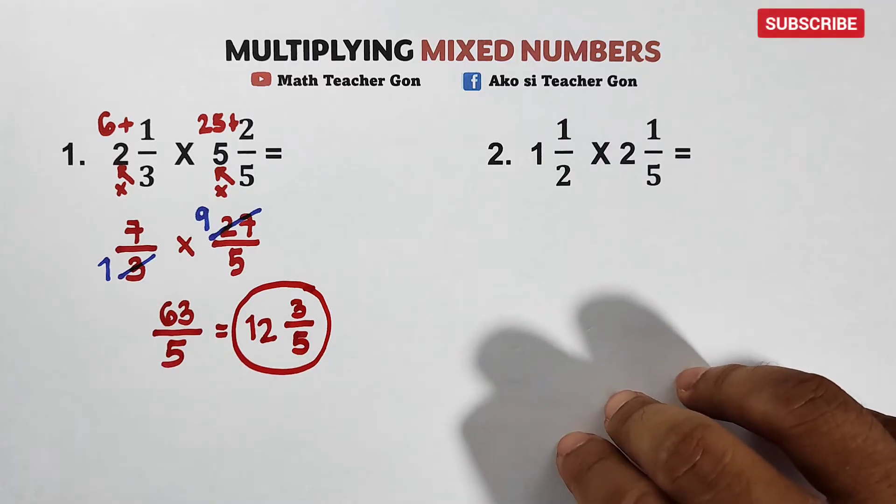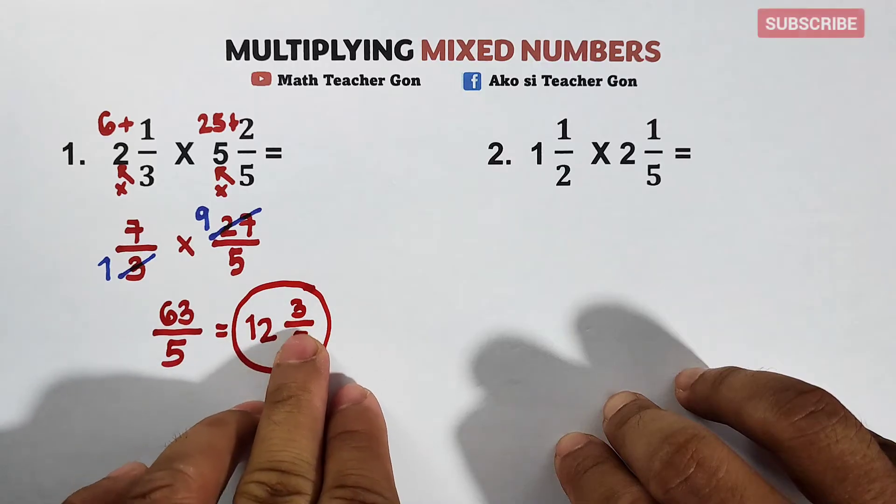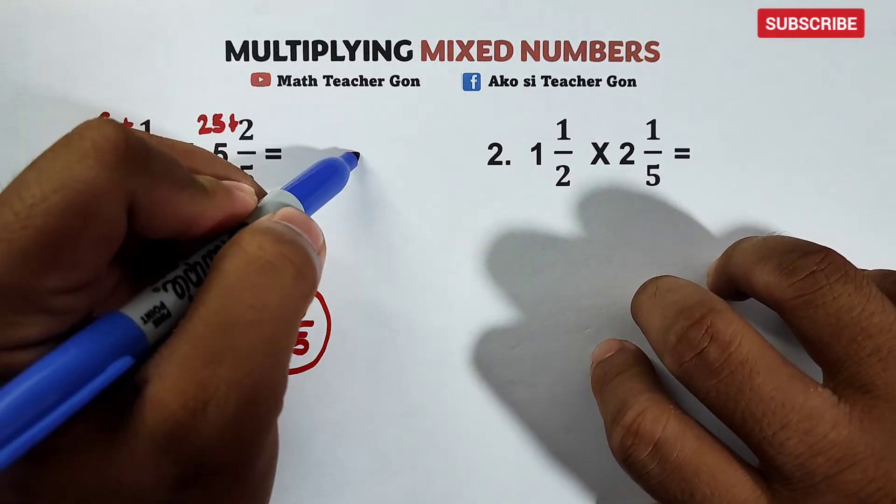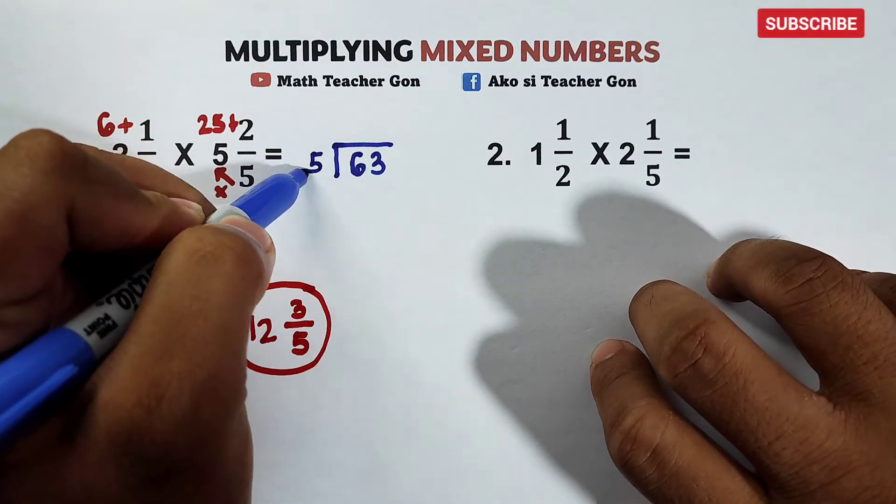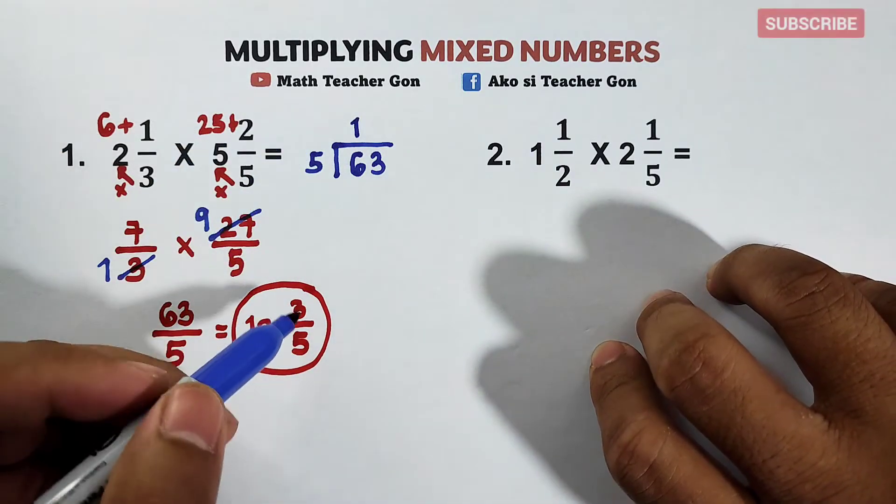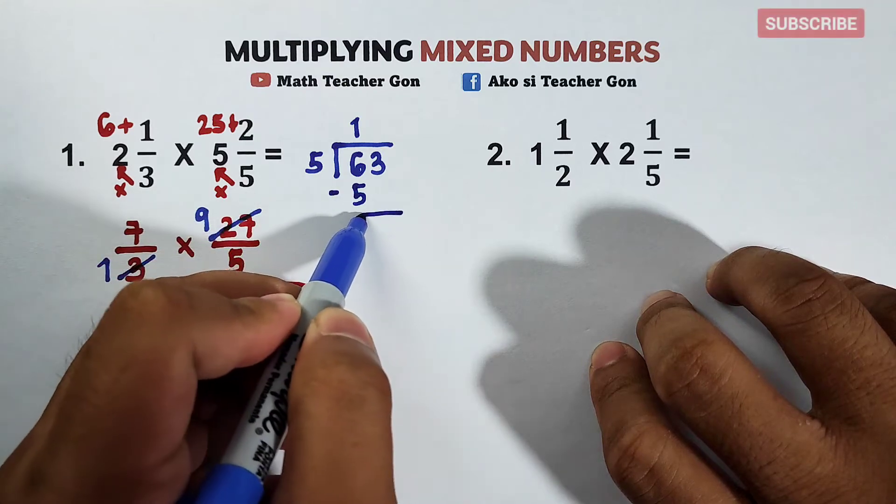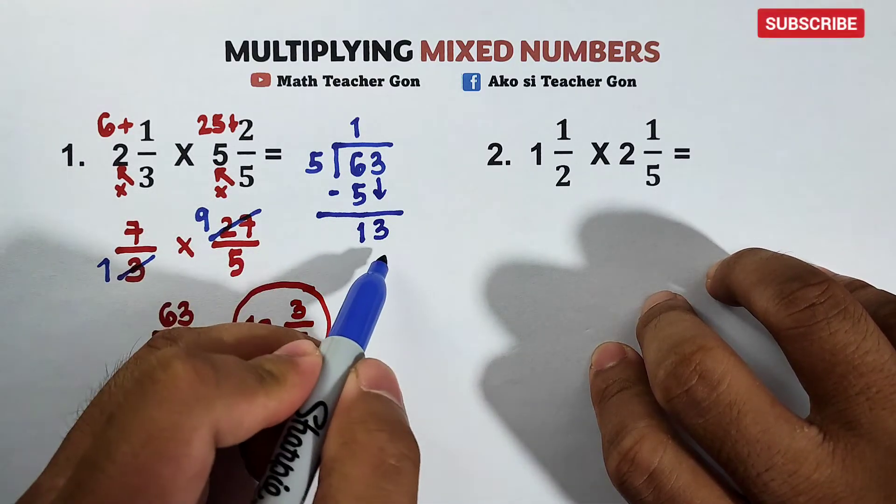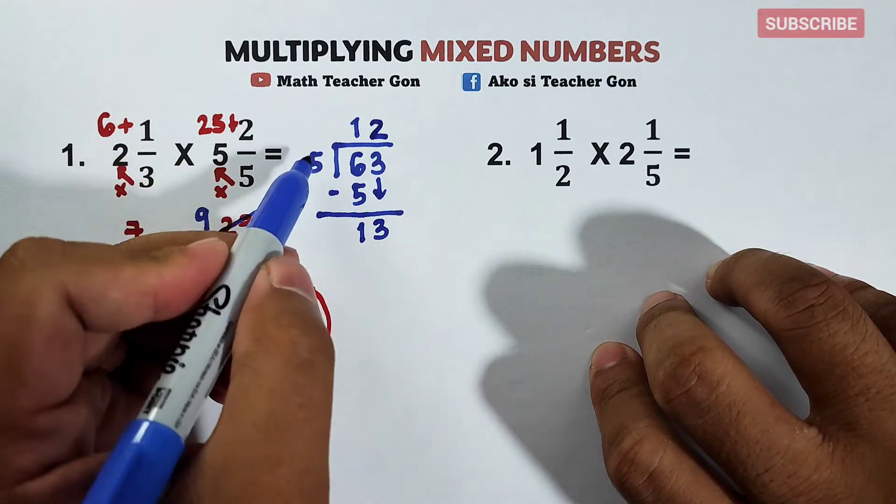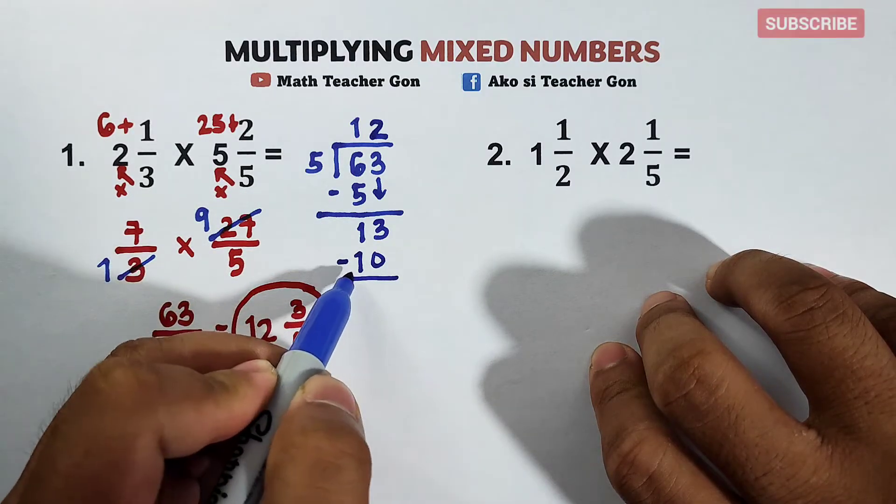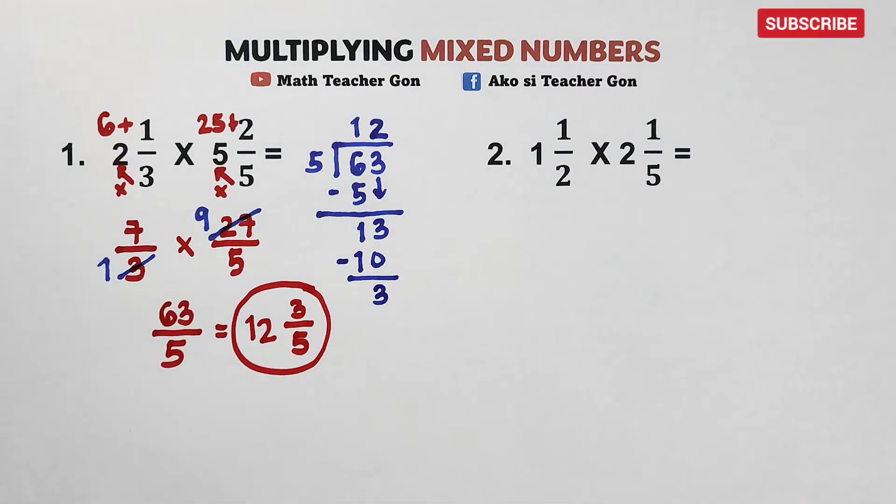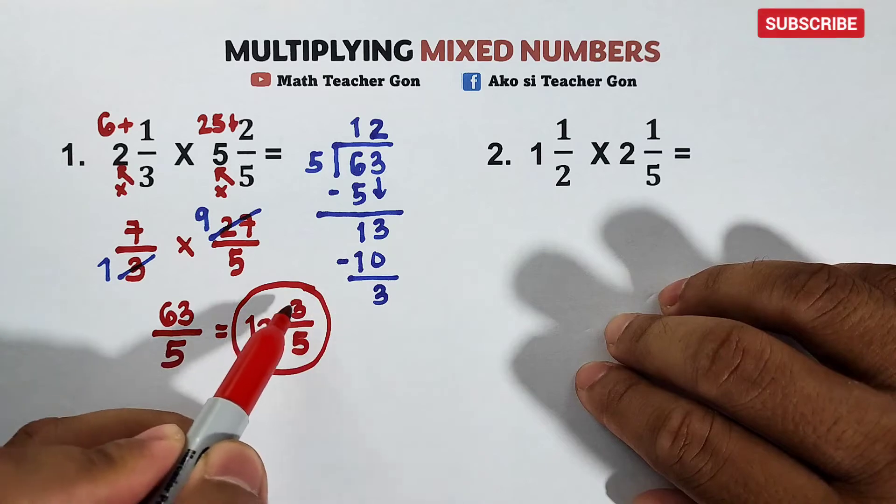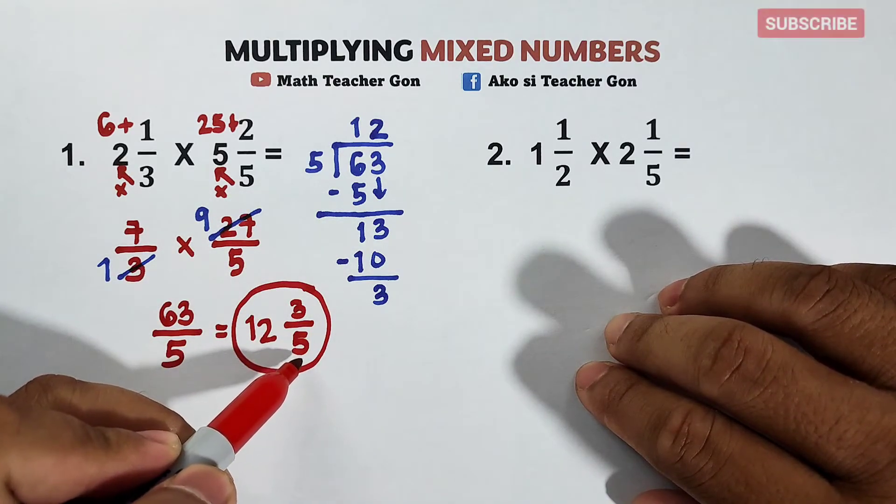Now, if some of you are asking, how did I convert 63 over 5 to 12 and 3 over 5? It goes like this. Let me show you. We will divide 63 by 5. 6 divided by 5, that is equal to 1. 1 times 5 is 5. Subtract the numbers. 6 minus 5 is 1. Bring down 3. Now, divide 13 by 5. 13 divided by 5 is 2. 2 times 5 is 10. Then subtract the numbers. So this is 3. As you can see, we have our quotient at the top, which is 12. So this will serve as your new whole number. This remainder is the numerator and the divisor must be your denominator. As simple as that.